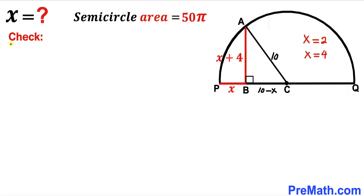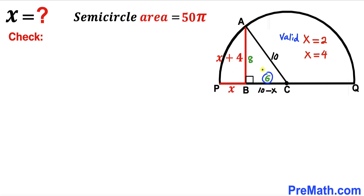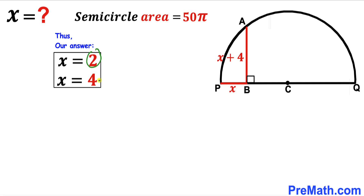Checking x = 2: BC = 10 − 2 = 8 and AB = 2 + 4 = 6. Since 6, 8, 10 are Pythagorean triplets, x = 2 is a valid solution. Checking x = 4: BC = 10 − 4 = 6 and AB = 4 + 4 = 8. Since 6, 8, 10 are also Pythagorean triplets, x = 4 is also a valid solution. Thus x = 2 and x = 4 are both valid answers.